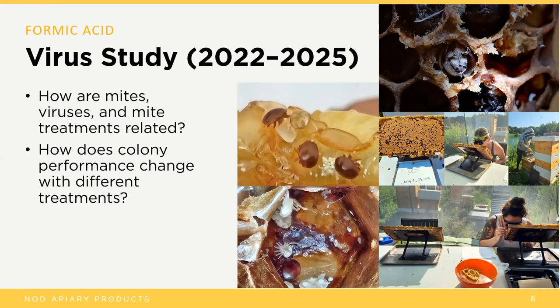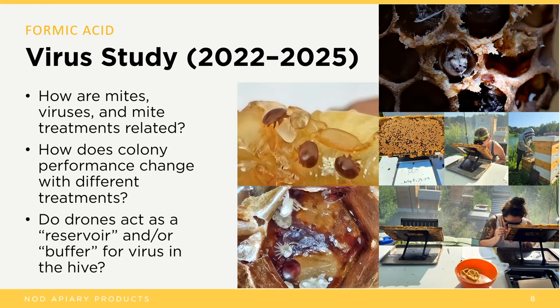We're asking: how does colony performance change with different treatments? How is that related to virus level? How is that related to mite level? And what happens in terms of things like honey production — an applied question for beekeepers. And then this is the novel aspect of the research: do drones actually act as some kind of a reservoir or a buffer, or both in some complicated way, for virus in the hive?